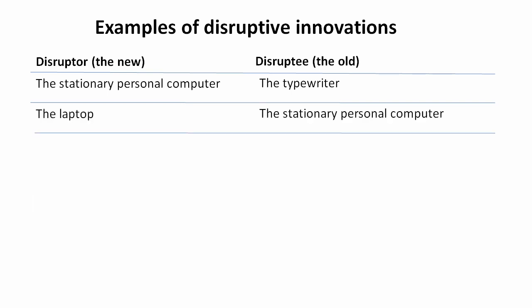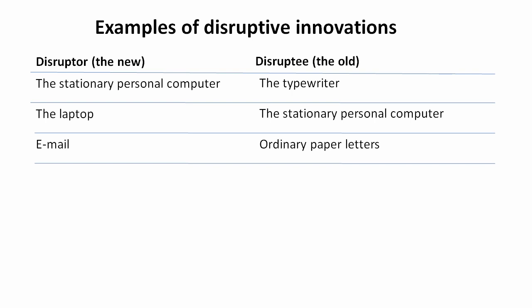Eventually, the laptop replaced the stationary personal computer. And you could say also that mobile phones have replaced stationary phones. Smartphones have replaced personal computers, laptops, and ordinary mobile phones. Smartphones have also replaced other handheld digital devices, such as cameras, MP3 players, calculators, and GPS devices. Emails have replaced ordinary paper letters.